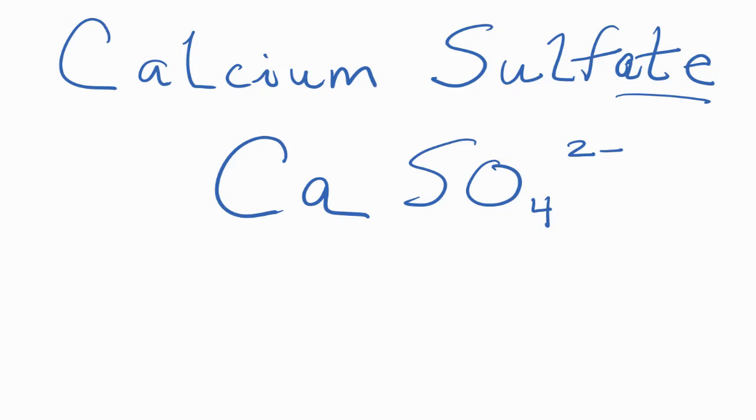We have a metal for calcium, and then that polyatomic ion, that sulfate, is made up of nonmetals. Metals, nonmetals, that's going to be an ionic compound.